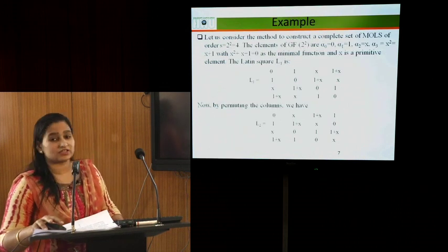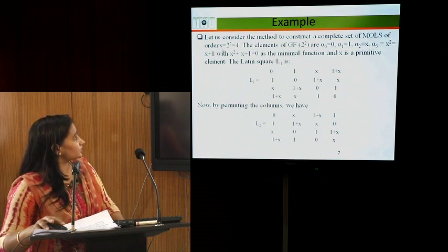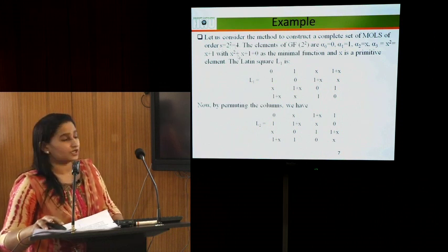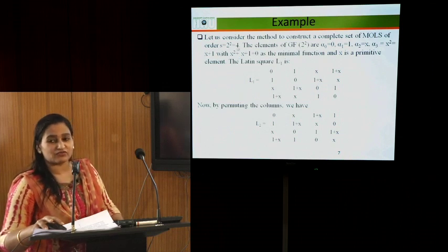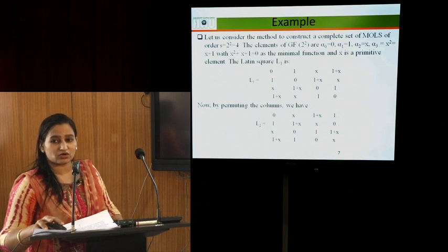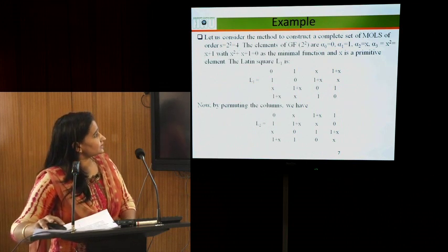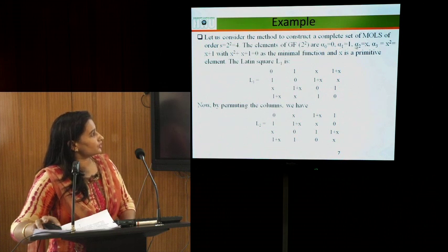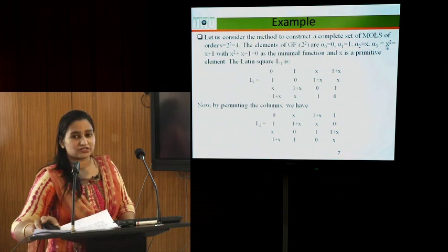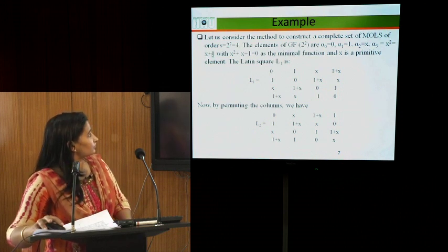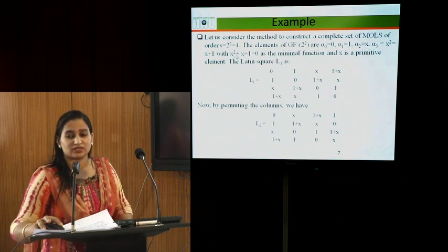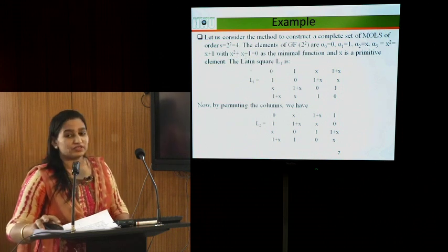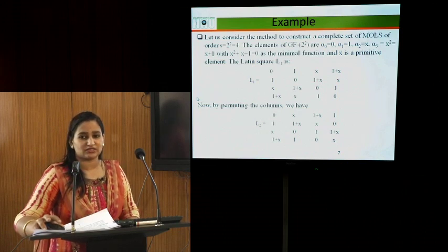We illustrate this with the example S = 2² = 4, which is a prime power. The primitive element α of GF(4) gives elements α₀ = 0, α₁ = 1, α₂ = x, α₃ = x², where x² = x + 1 using the minimal polynomial x² + x + 1 = 0. We start constructing the Latin square using the equation αᵣ + αᵢ·αₜ.